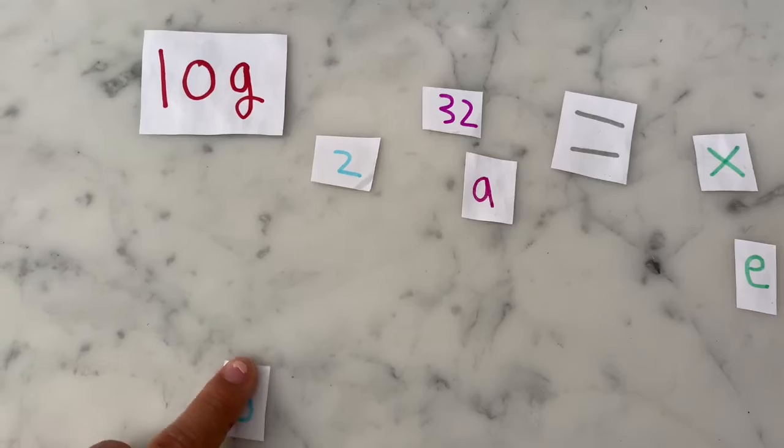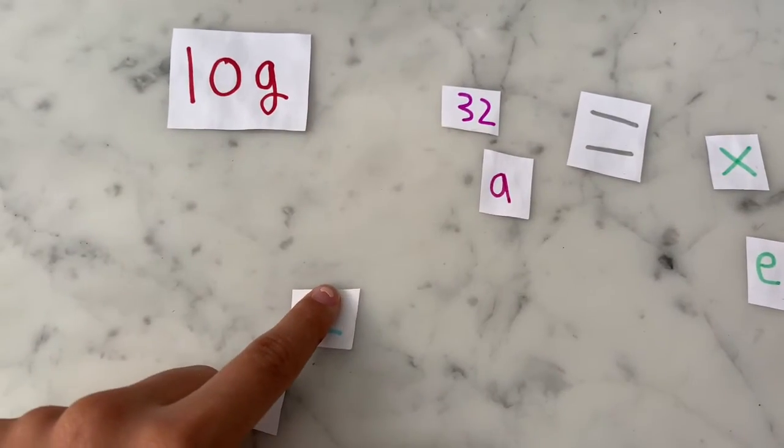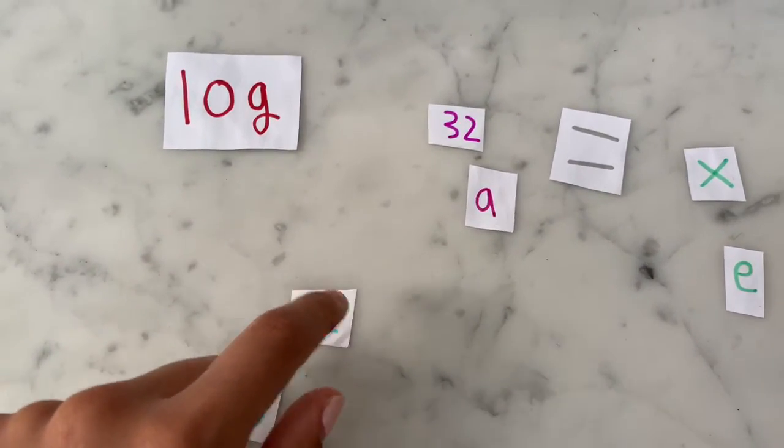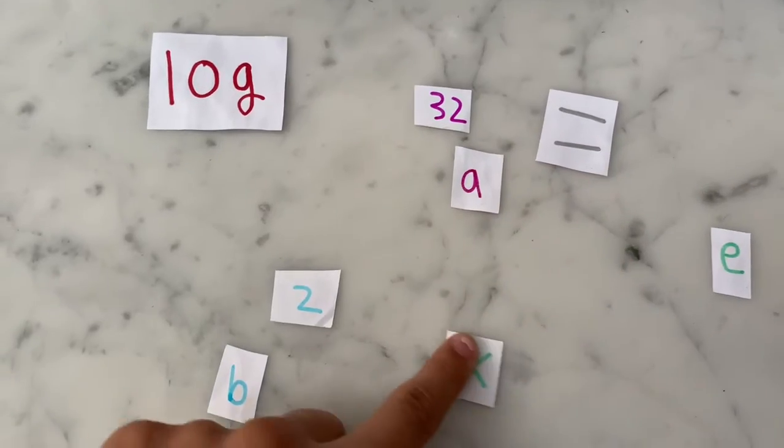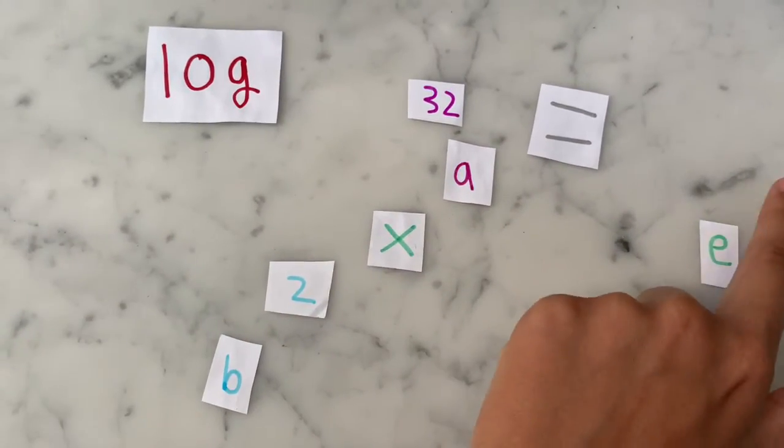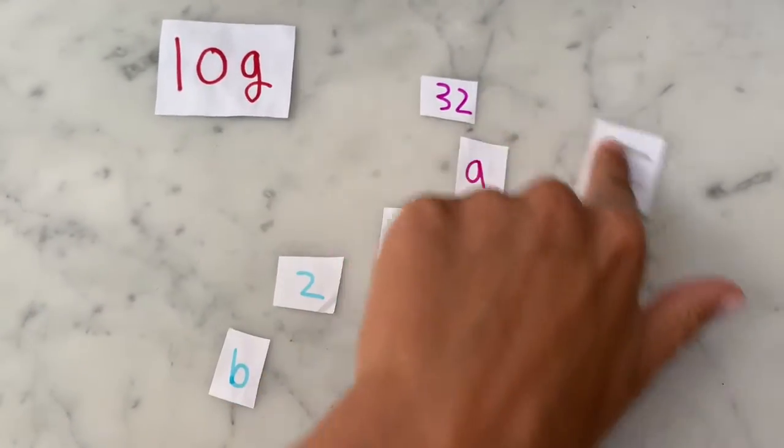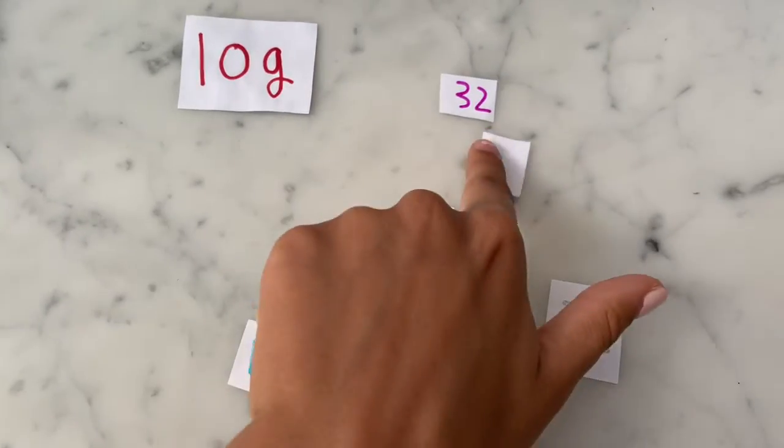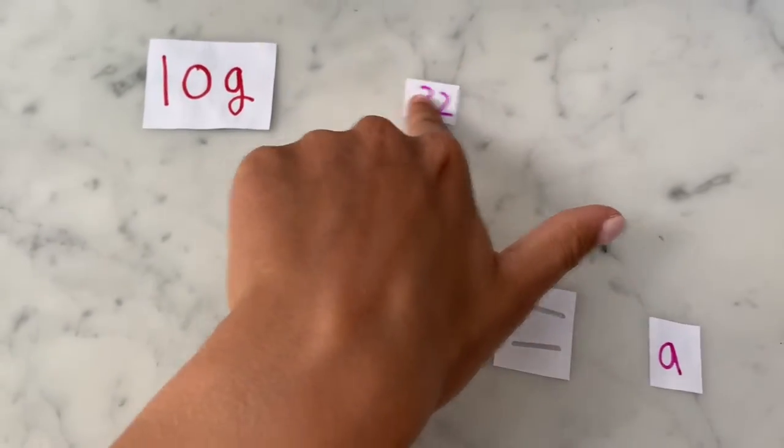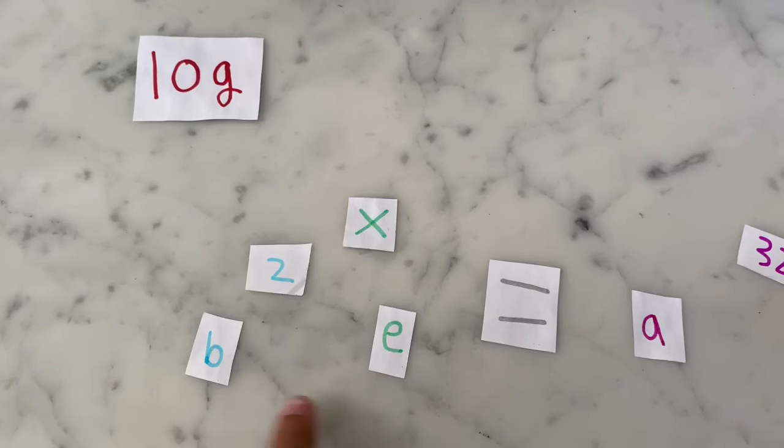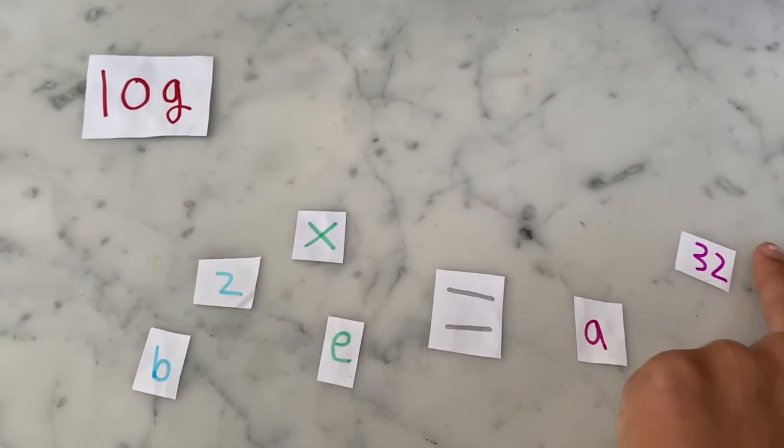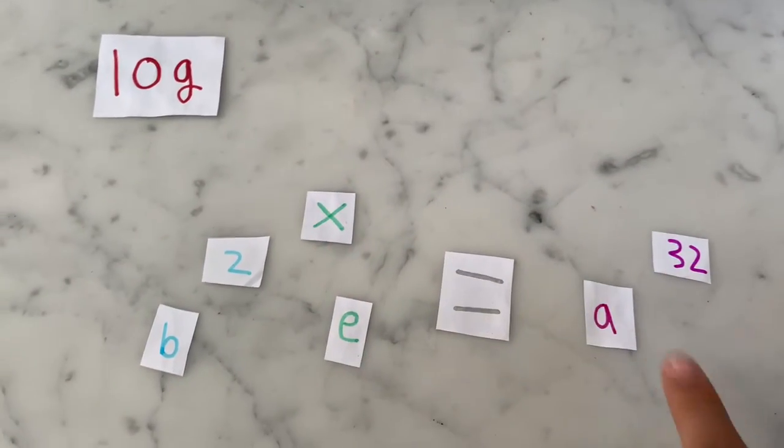So first, take the base, which is 2. Then the exponent, which is x, equals a, the answer. So 2 to the power of x equals 32.